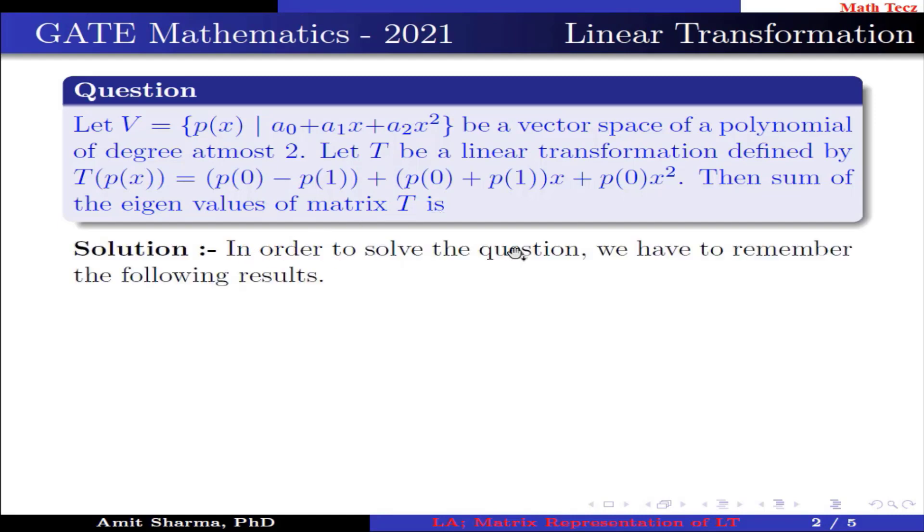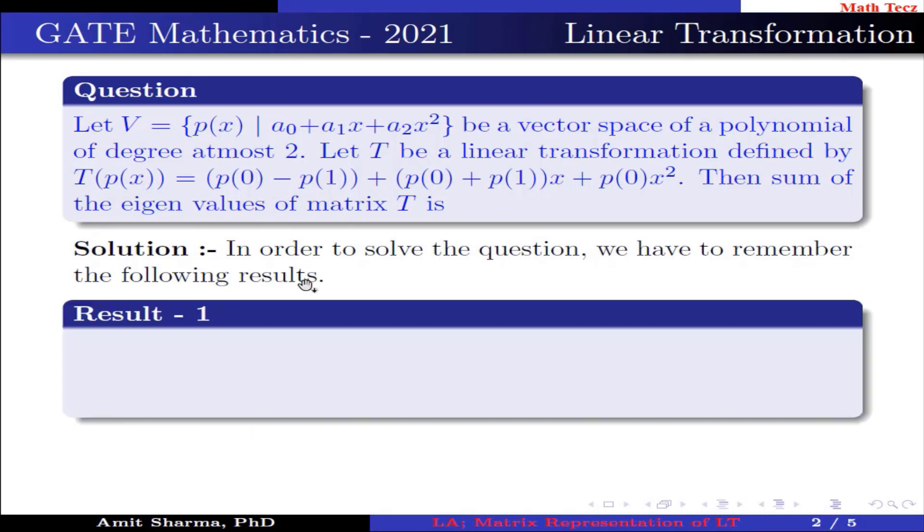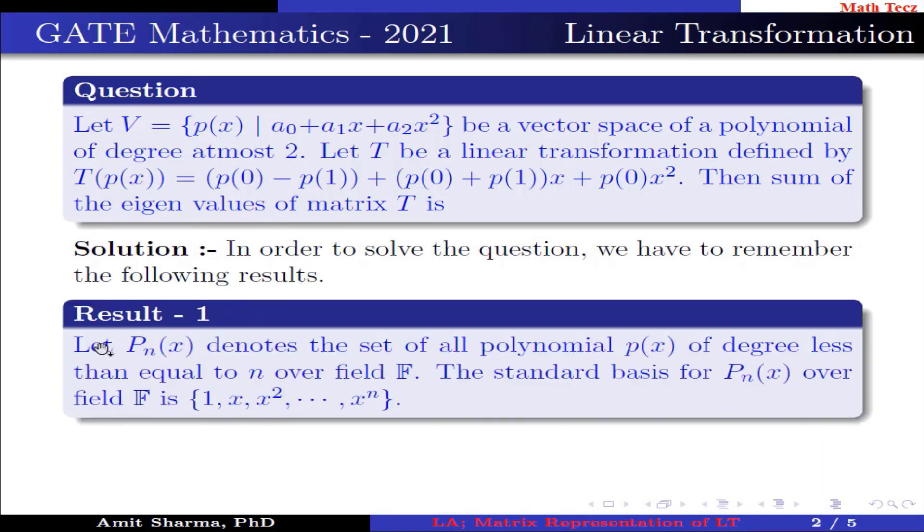In order to solve the question we have to remember the following results. Result number 1: Let Pₙ(x) denote the set of all polynomials p(x) of degree less than or equal to n over field F. The standard basis for Pₙ(x) over field F is {1, x, x², ..., xⁿ}.